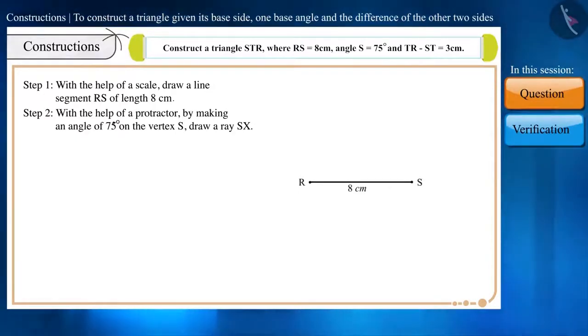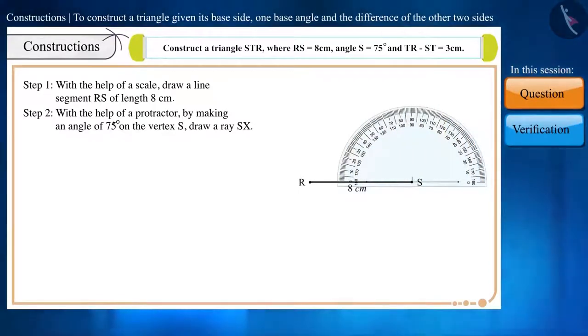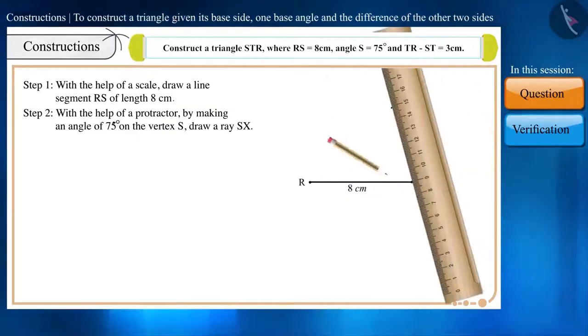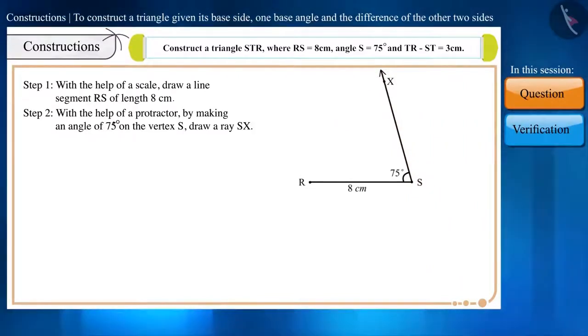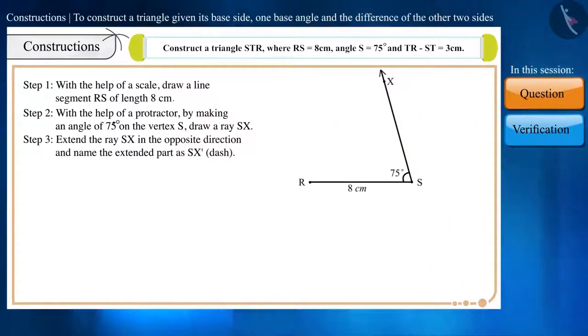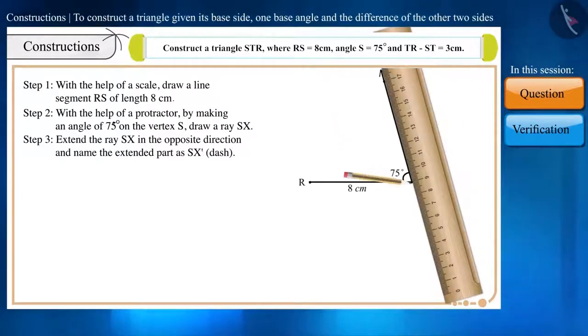Step 2. With the help of a protractor, by making an angle of 75 degrees on the vertex S, draw a ray SX. Step 3. Extend the ray SX in the opposite direction and name the extended part as SX dash.